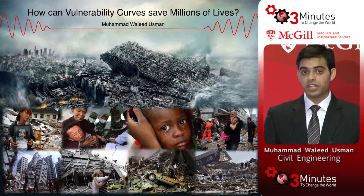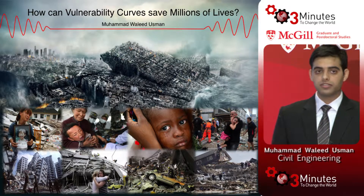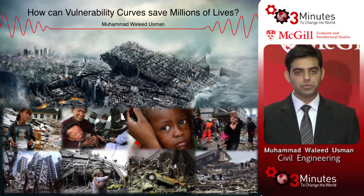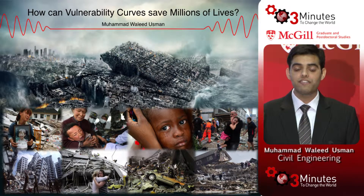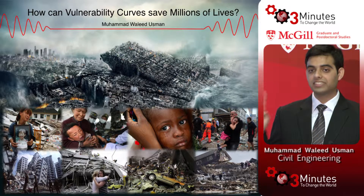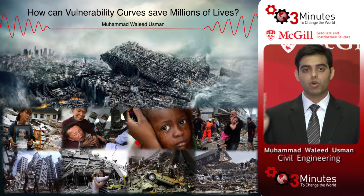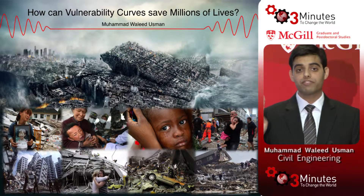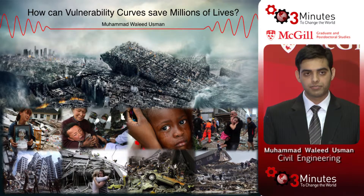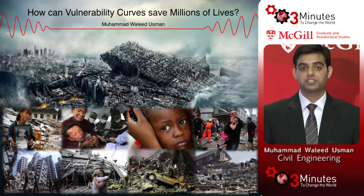For this assessment, in order to obtain universally applicable results, three major things were done. First, the critical ground motion data for former earthquakes were used. Then 25,000 samples of concrete and steel were obtained from commercial testing labs. Finally, analysis and simulations of over 800 reinforced concrete frame structures were performed by varying multiple building and material parameters. The outcome of this research study was vulnerability curves.